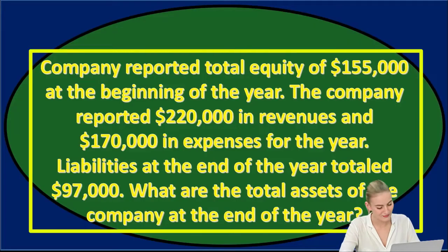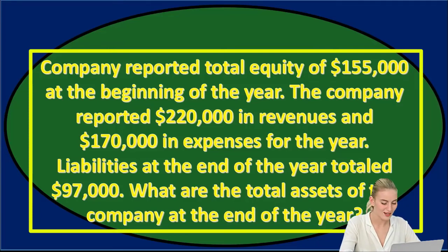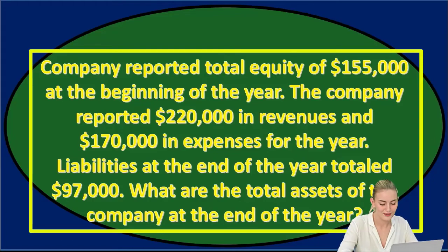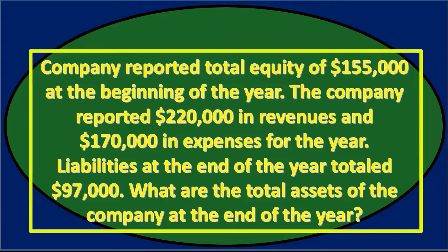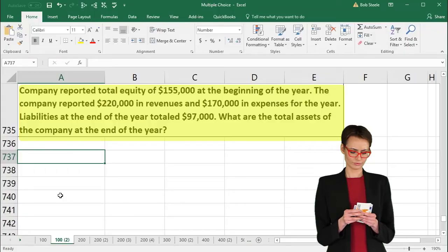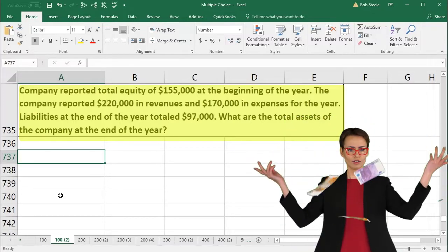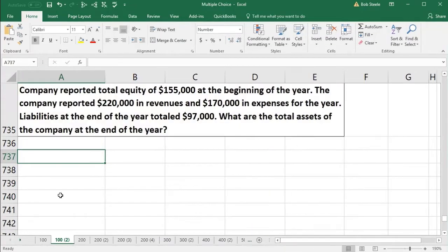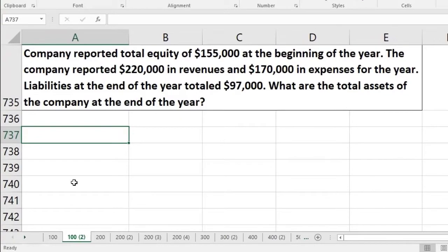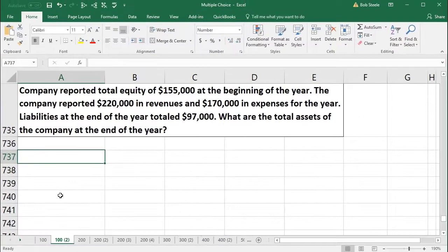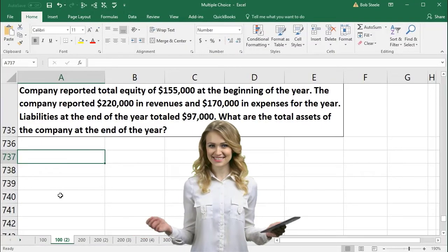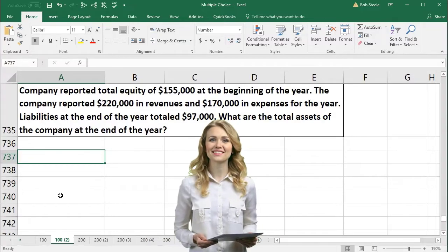Next question: a company reported total equity of $155,000 at the beginning of the year, revenues of $220,000 and expenses of $170,000 for the year, and liabilities at year-end of $97,000. What are the total assets at the end of the year? This problem requires two calculations: first find ending equity, then use the accounting equation.